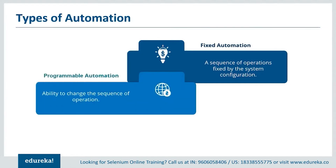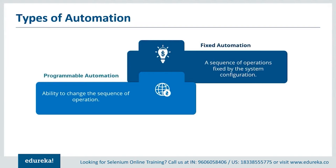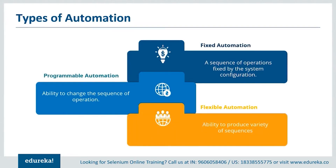Next is programmable automation, which can be used to change the sequence of any operation based on requirements specified by the user. It provides various options to the user to edit the sequence as per their requirements. Then there is flexible automation, which can inherit both fixed and programmable automation. It has the ability to produce a variety of sequences that are not limited to just one static type of automation.